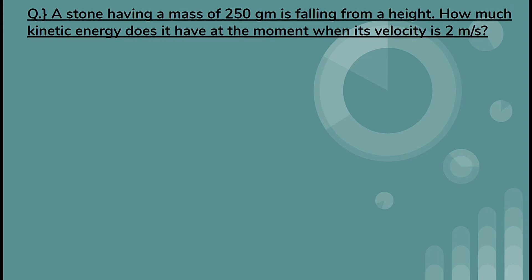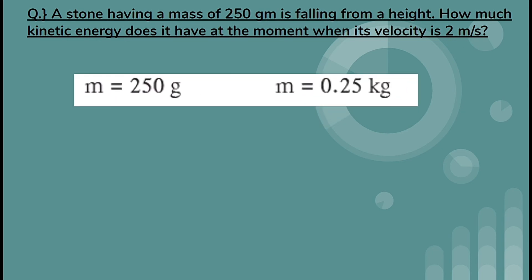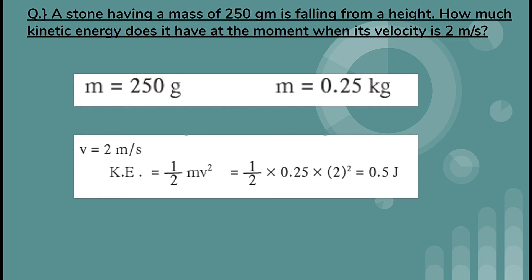Let's solve a question. A stone having a mass of 250 grams is falling from a height. How much kinetic energy does it have when its velocity is 2 m/s? Mass = 250 g = 0.25 kg, v = 2 m/s. KE = ½mv² = ½ × 0.25 × 2² = 0.5 joules.